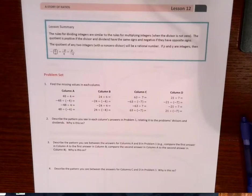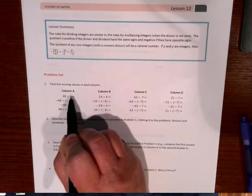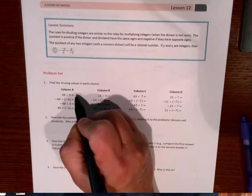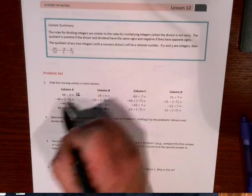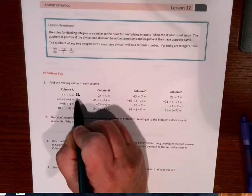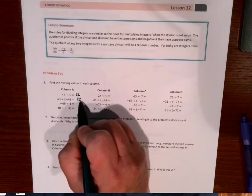So starting with number 1, find the missing values in each column. So column A, 48 divided by 4 is 12. Negative 48 divided by negative 4, there's two negatives, so it's also a positive 12.